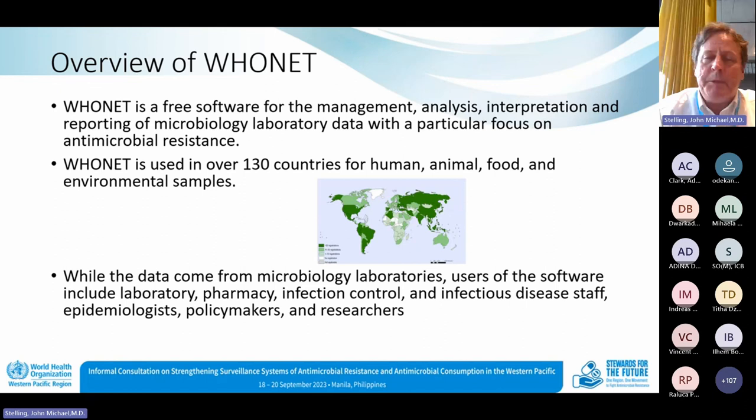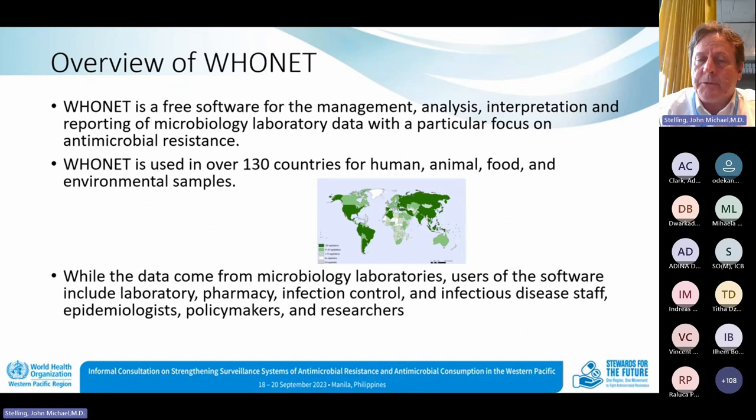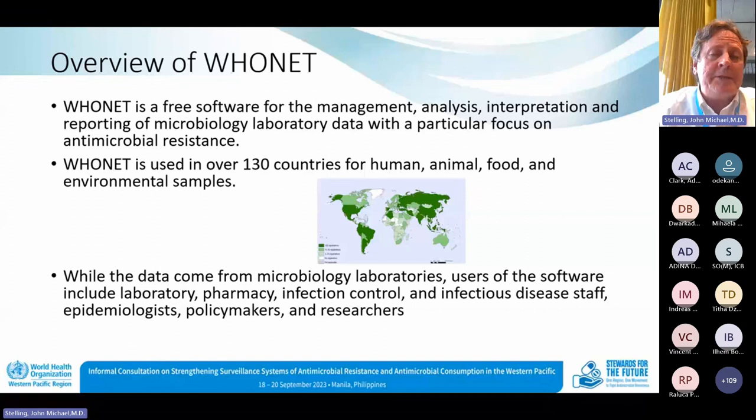WHO Net can be used for things beyond antimicrobial resistance, and many people do that. WHO Net is used in at least 130 countries — maybe 140 or more — for human, animal, food, and environmental samples. The map shown is quite old; we're in the process of updating it. We will also mention a WHO Net user survey, and we look forward to your efforts to make sure our information is accurate.